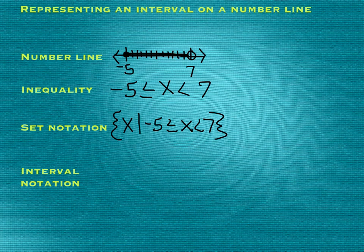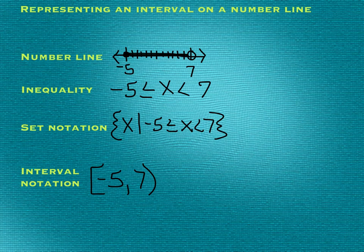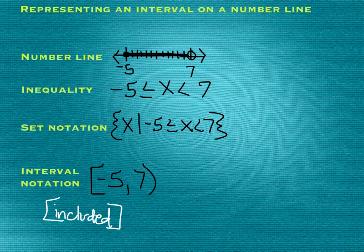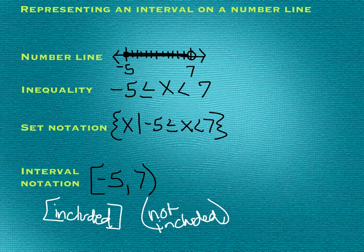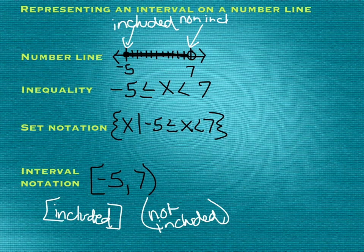Interval notation is what we talked about yesterday — when it's included, so the negative 5 is included, we would put a hard bracket, then the negative 5, then a comma, then the higher bound, the 7, and it's not included, so we have a parenthesis. You can write a note for yourself: included is in brackets, and non-included is in parentheses. Included has a closed circle, and non-included has an open circle. Sorry, that's messy, but this stylus is hard to write with.